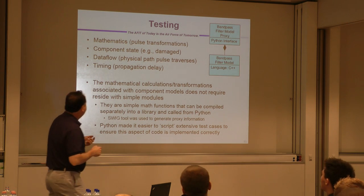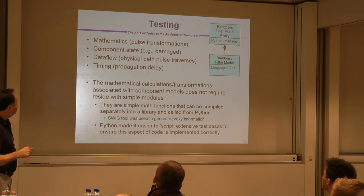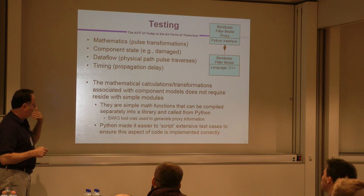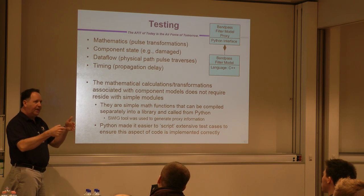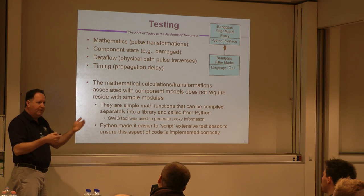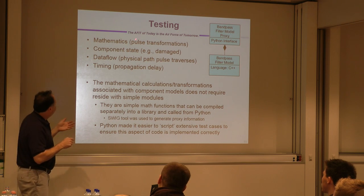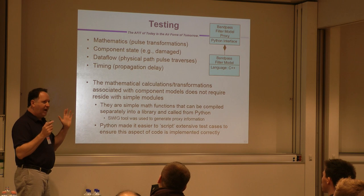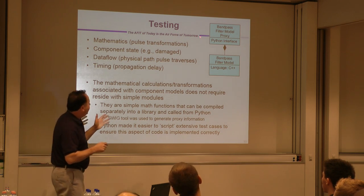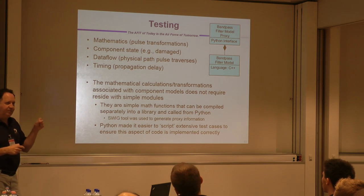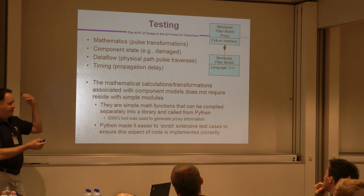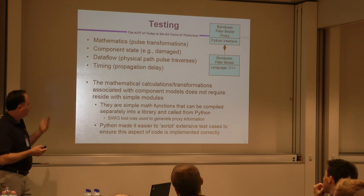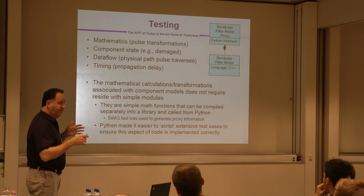Testing-wise, we kept the mathematics as a bunch of functions. Whenever we were concerned about how the flow of pulses moved through the system or the timing of those pulses, we would actually build OMNeT test cases — special OMNeT programs that do nothing but test out our components to make sure they flow right and timing looks right. But if we want to purely test mathematics — not data flow and timing, just mathematics — we would use the SWIG package and wrote wrapper classes to bring things into Python. Python made it really easy to run a million points and just plot something, so it was easy to combine the testing capabilities of Python with OMNeT for the right kinds of tests.